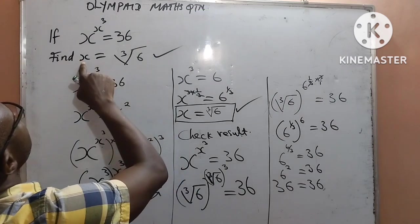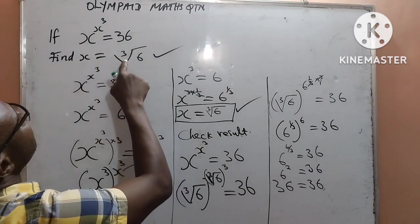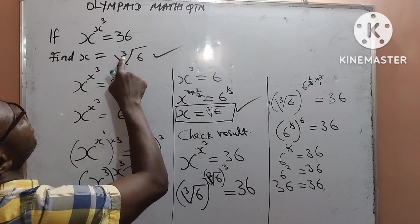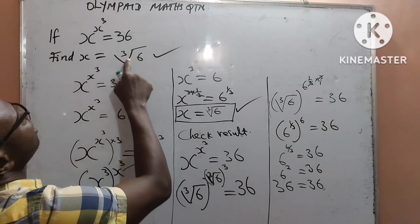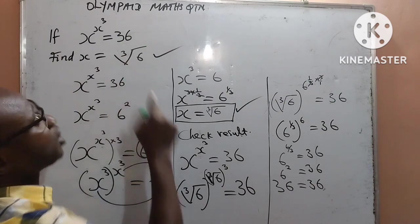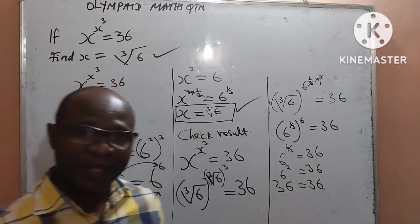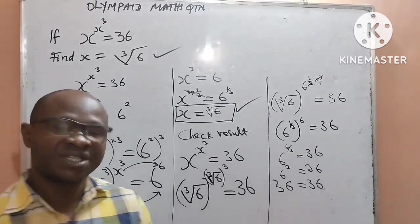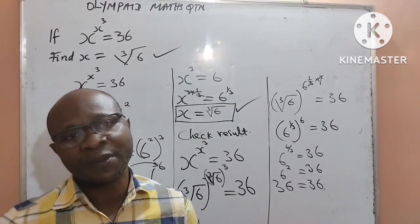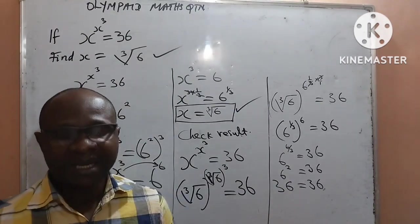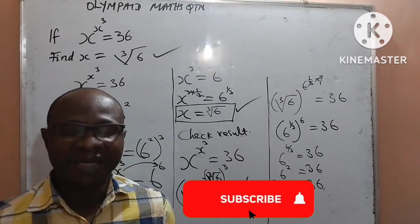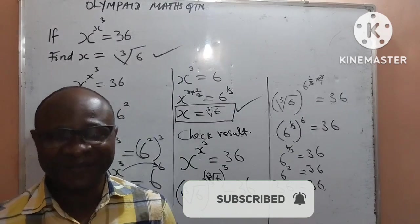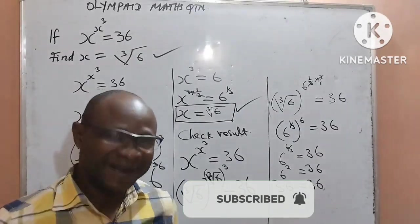6 squared is indeed correct. We can confirm that x, which we were asked to find, is actually the cube root of 6. Thank you for watching this video to the end. If this is your first time stopping by, please subscribe to my channel, share my videos, and give a thumbs up. God bless you.